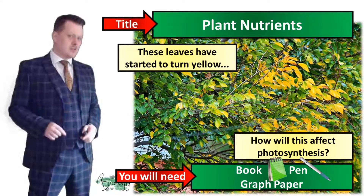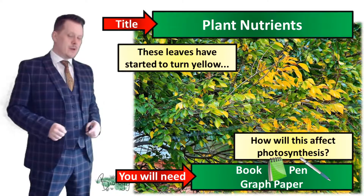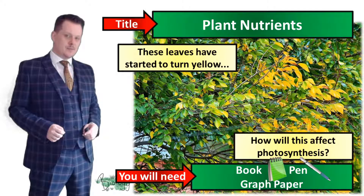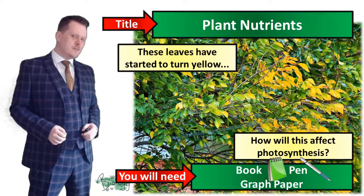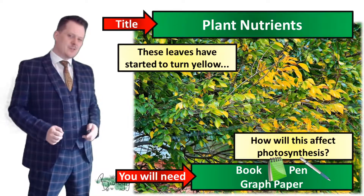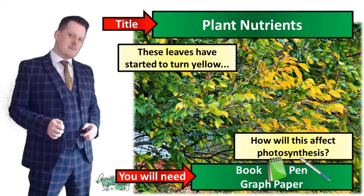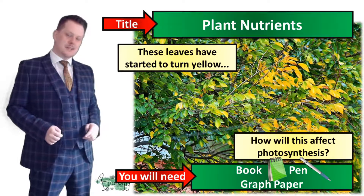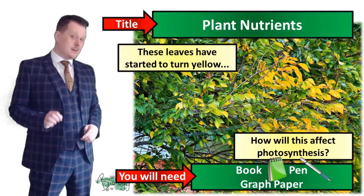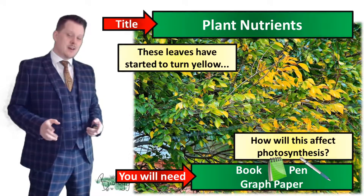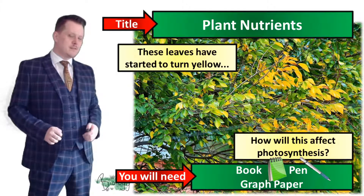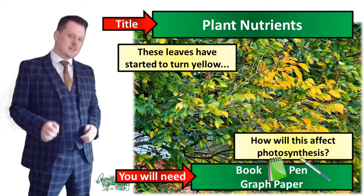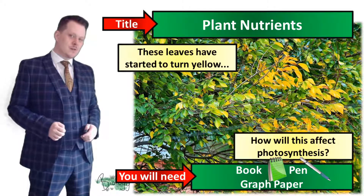So let's talk about this yellowing of these leaves. If these leaves are becoming less green then there are fewer chloroplasts in these leaves, and if there are fewer chloroplasts that means the rate of photosynthesis is also going to decrease.